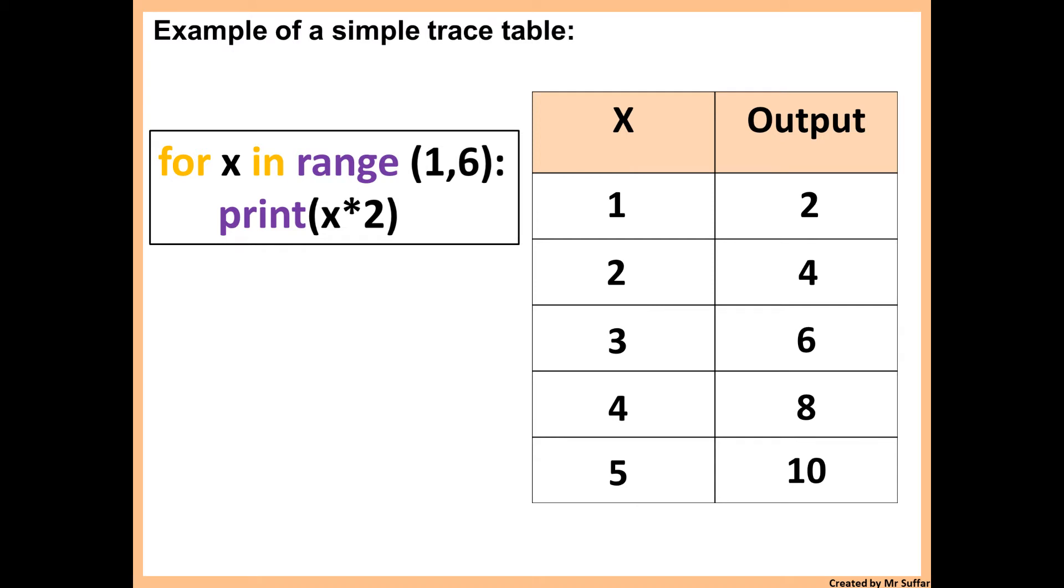And this is a simple example of a trace table. So you just fill all the values, all the changes in the values of the variables, and the outputs as well. So whenever you have a variable changing, whenever you have an output, you need to fill it in the table.